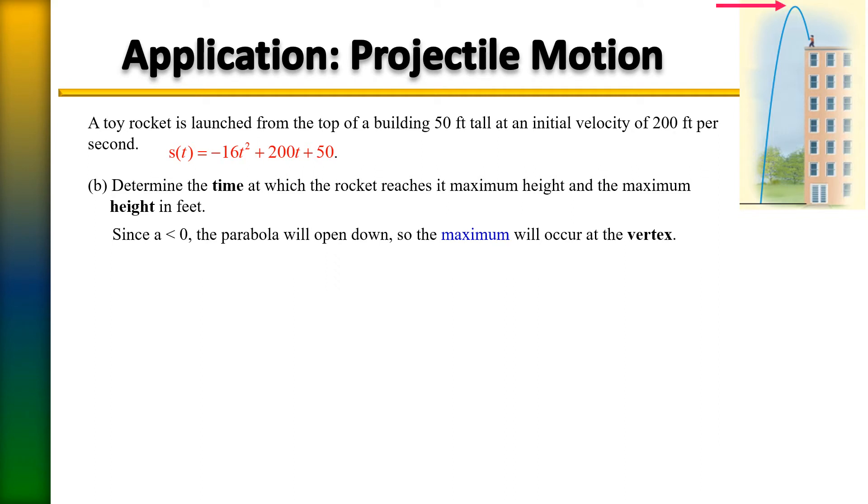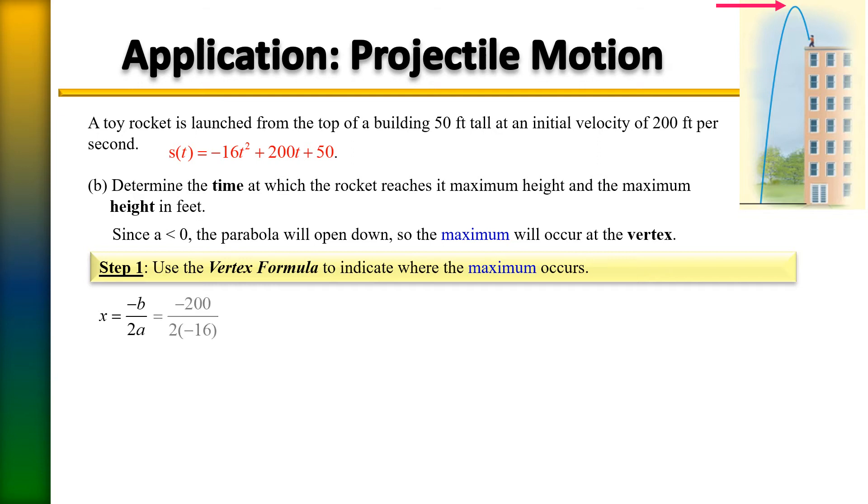The maximum will occur at the vertex. So all we need to do is simply just find the vertex, and we can do that by plugging it into the vertex formula. To find your x value of your vertex, recall that it's minus B over 2A. So if B is 200, the top will be negative 200. The bottom will be 2 times A, and A in this case is negative 16. So 2 times negative 16, that's going to give me up top negative 200, and on bottom negative 32. A negative divided by a negative equals a positive.